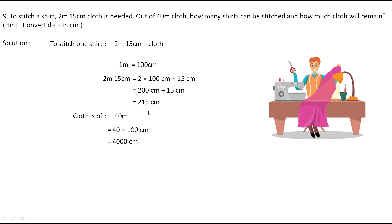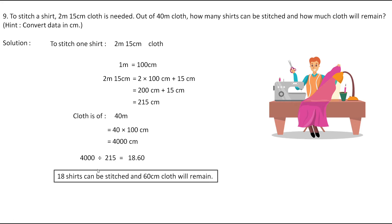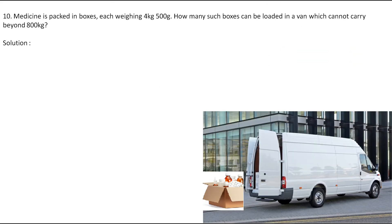This calculation gives us: 18 shirts can be stitched and 130 centimeters of cloth will remain. This is the final answer of this question. Now let's move to the 10th question.